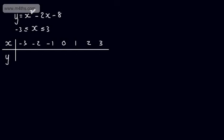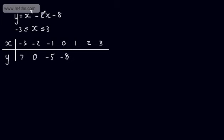Let's work through the y values. For x = -3: 9 + 6 - 8 = 7. For x = -2: 4 + 4 - 8 = 0. For x = -1: 1 + 2 - 8 = -5. For x = 0: 0 + 0 - 8 = -8. For x = 1: 1 - 2 - 8 = -9. For x = 2: 4 - 4 - 8 = -8.